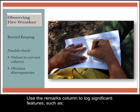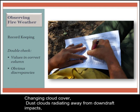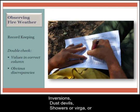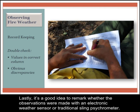Weather conditions naturally fluctuate during the course of a day, but large changes may indicate either a significant weather event or an instrument malfunction. To reduce potential errors, it is a good idea to cross-check weather observations with nearby observers. Use clear penmanship — observations that aren't readable aren't usable. Use the remarks column to log significant features such as cumulus buildup or thunderstorms, lightning, sudden wind shifts or changes in wind speed, changing cloud cover, dust clouds radiating from downdraft impacts, inversions, dust devils, showers or virga, or other significant changes since the last observation. It's a good idea to remark whether the observations were made with an electronic weather sensor or traditional sling psychrometer.